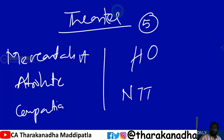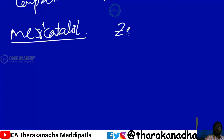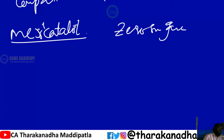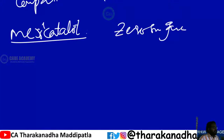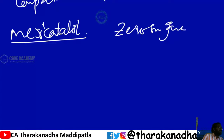Mercantilist theory proposes a zero-sum game. Mercantilists believe that a country is more powerful which has more precious metals, called species — for example, silver, gold, etc. When you do more international trade, you will get more valuable metals and become a more powerful country. The zero-sum game means the gain by one party will always be equal to the loss by the other party.